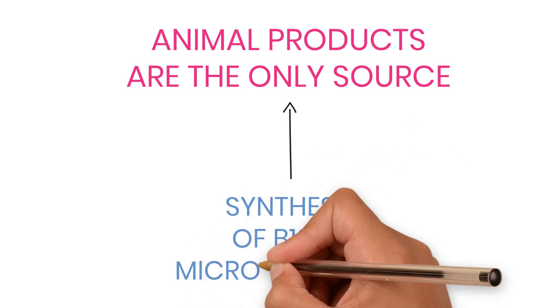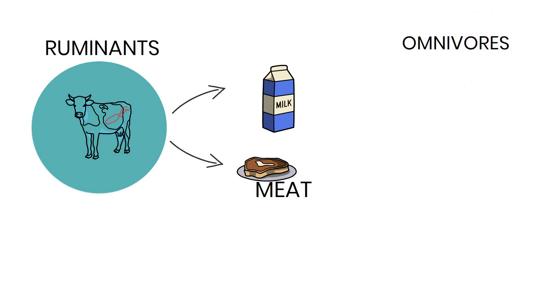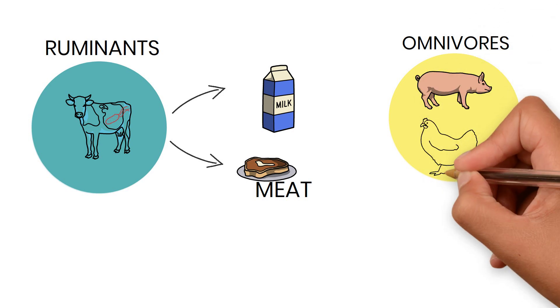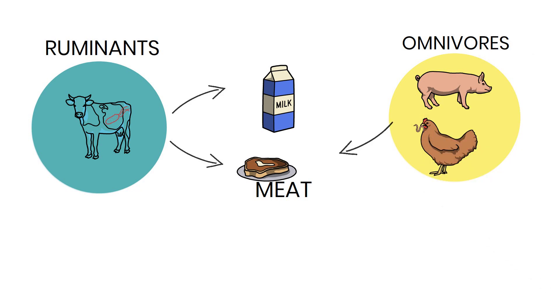For example, in case of ruminants like cows, their foregut contains B12-synthesizing bacteria, and that B12 is available to us in their milk and meat. But in case of omnivores like pigs and hens, they get B12 from their diet and it is available in their meat.